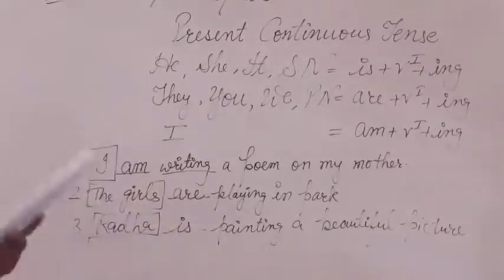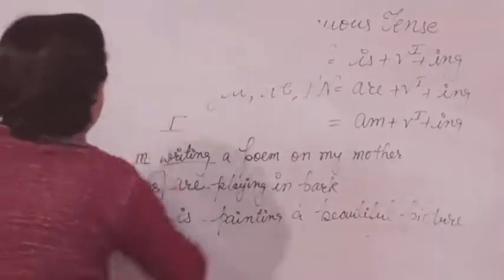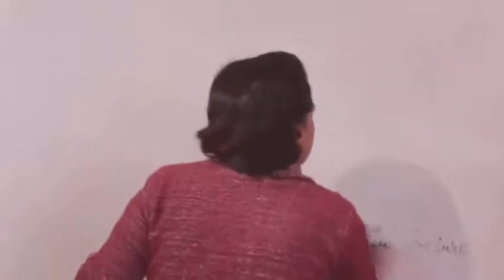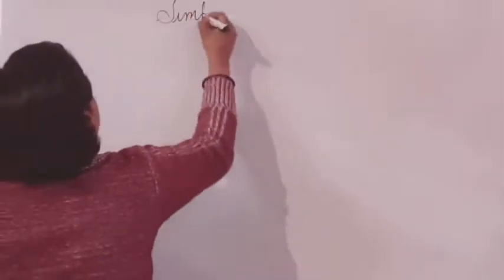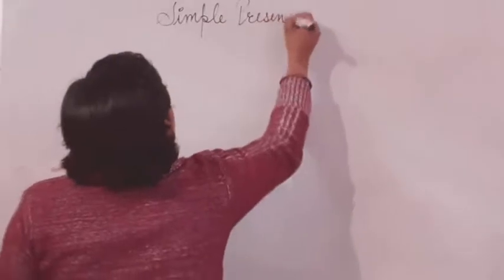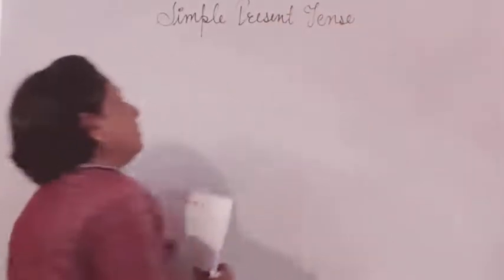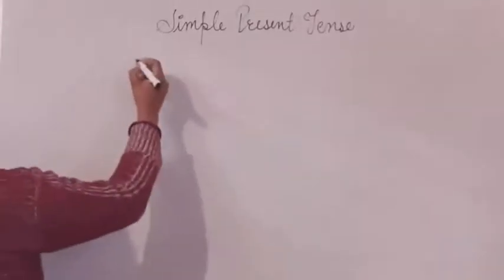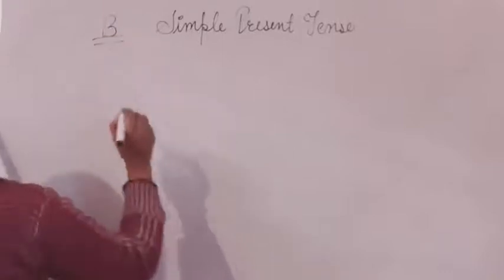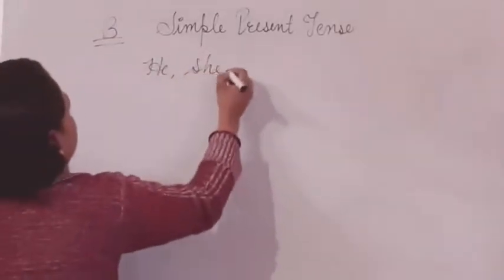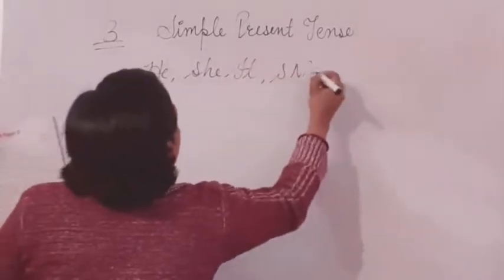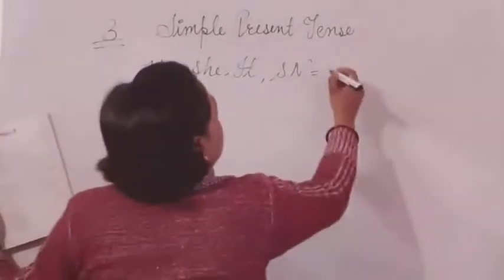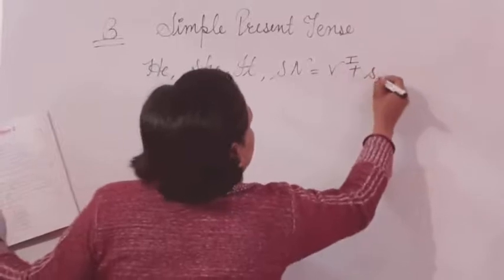Now we come to the second exercise of this test paper, which is about the simple present tense. The rule is: if your subject is he, she, it, or a singular noun, we will use the verb in first form plus S or ES.